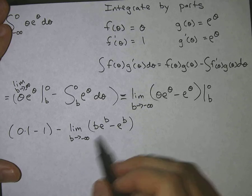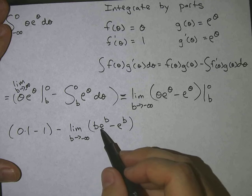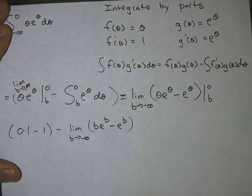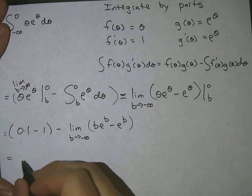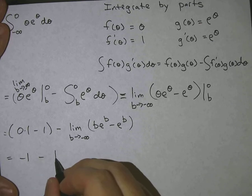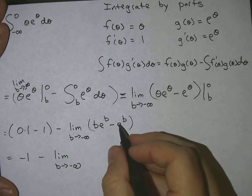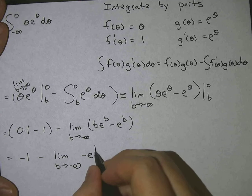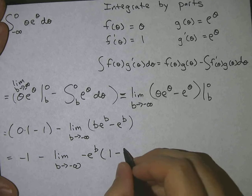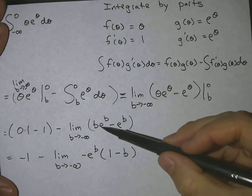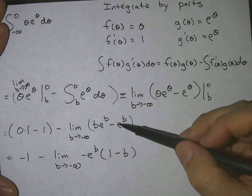If we look at this, it gets a bit messy with the infinities — it's negative infinity times e to the negative infinity minus e to the negative infinity. So I'm going to rewrite this by factoring out a negative e to the b, which gives one minus b. Factoring out just e to the b would give b minus one, but taking the negative switches it to one minus b.